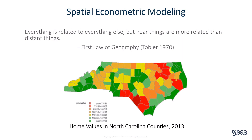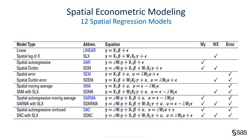Now let's shift gear and look at our second example: spatial econometric modeling. When you buy a house, your real estate agent might tell you the three most important factors that determine the house price: location, location, and location. If you ignore the linkage between locations in your model, your model might lead you to the wrong interpretation, the wrong prediction, and then the wrong decision. How does one location affect other locations? It might be through target variable y, or regressors x, or error, or a combination of all these factors. Here are 12 popular spatial regression models, and SAS supports all of them.